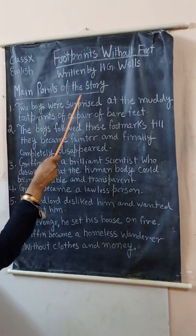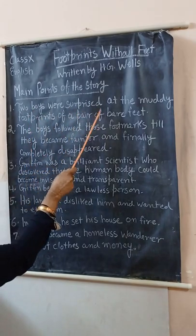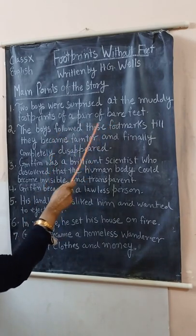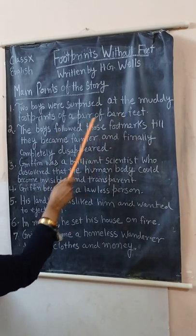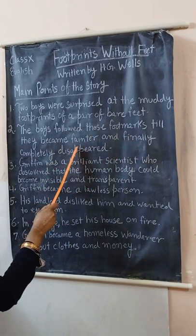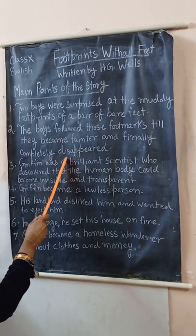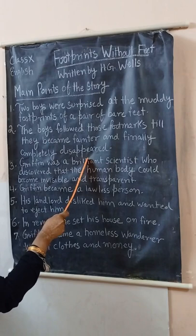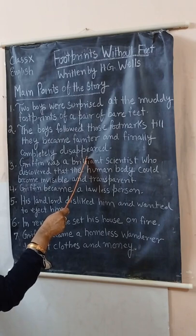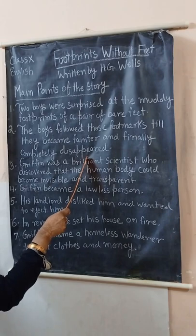Now we are starting the main points of the story. Two boys were surprised at the muddy footprints of a pair of bare feet — bare means without shoes. The boys followed those footmarks until they became fainter and finally completely disappeared. They saw muddy impressions on the steps of a house in London; they were the fresh footmarks of a bare-footed man.